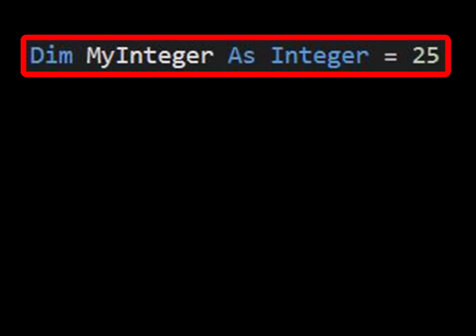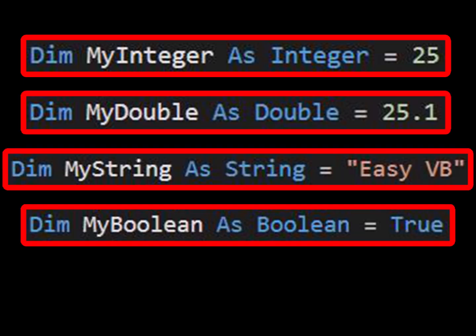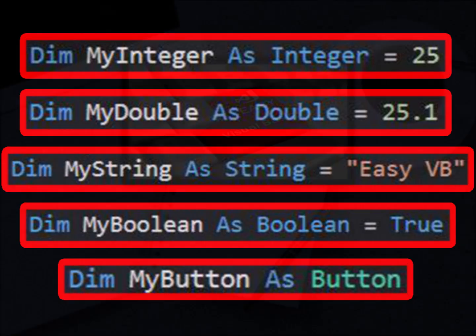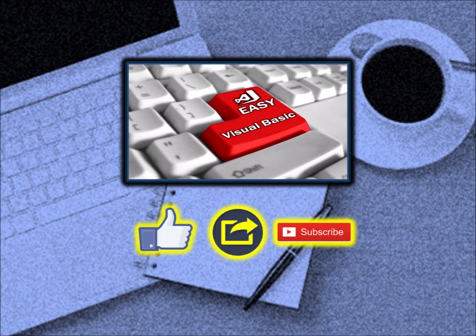In this tutorial we have learned about variables: for whole numbers — integer; for real numbers — double; for lines of text — string; for logical operations — boolean; and for control objects such as buttons. We have learned how to write variable declaration statements, assign data types, and initialize values. In the next tutorial we will learn more about variable data types. Hope this tutorial was useful — if it helped you, please like, share, and subscribe.